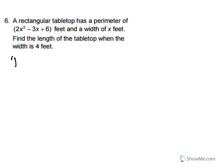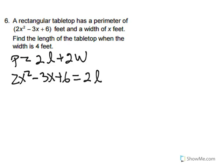So we know that the perimeter equals 2 times the length plus 2 times the width. So we have 2x squared minus 3x plus 6 equals 2 times L plus 2 times x. But we're given x equals 4,